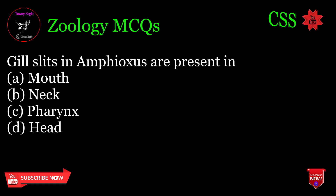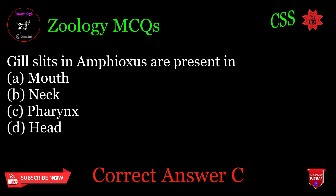Gill slits in amphioxus are present in: A. Mouth, B. Neck, C. Pharynx, D. Head. Correct answer: C.